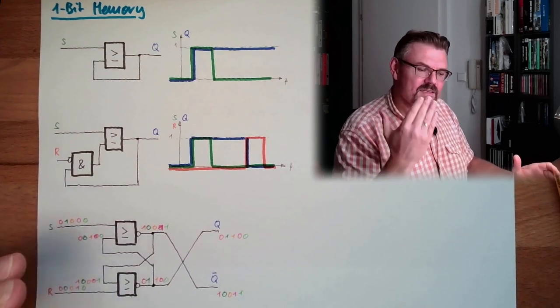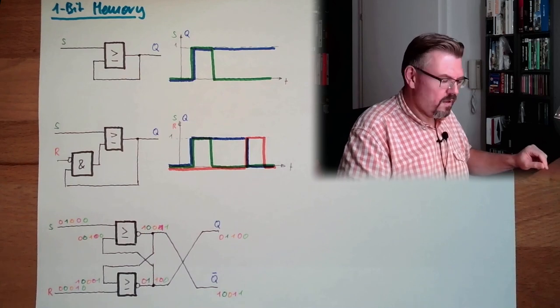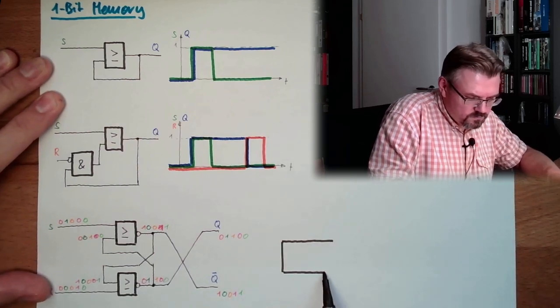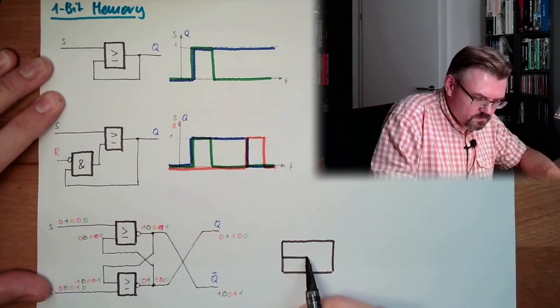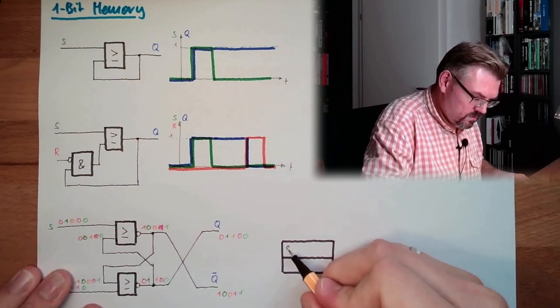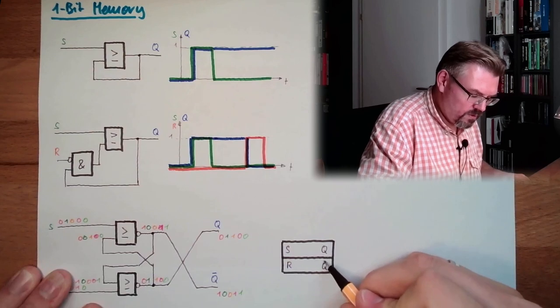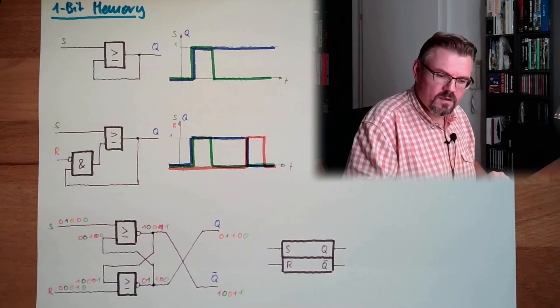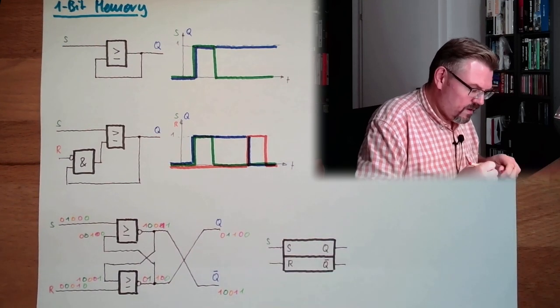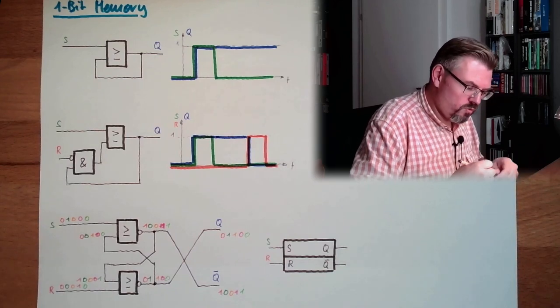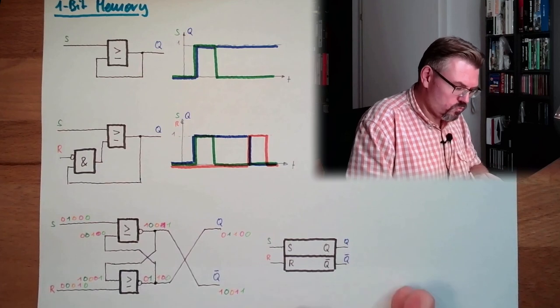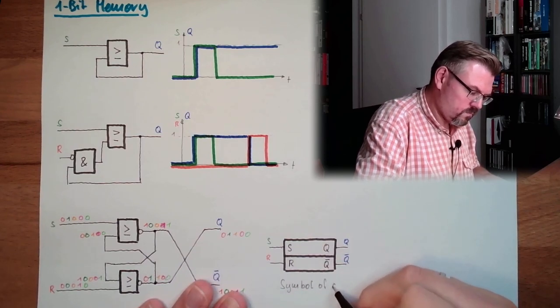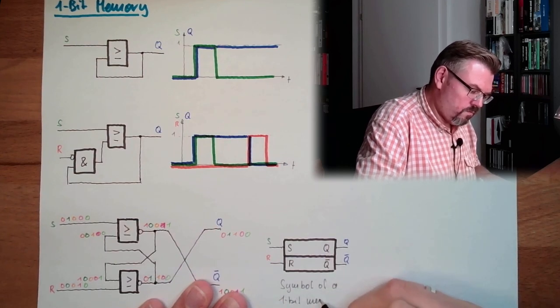All right. So this is Q and NOT Q. Such memories, they have a unique symbol, our own symbol, and it's looking like that. It's a block where we have the S input, the R input, then we have the Q and the NOT Q output. That's the symbol, the corresponding symbol of this memory. So we have to connect here S line, we have to connect here the R line, and we have then as available outputs Q and NOT Q. This is the symbol, one bit memory.